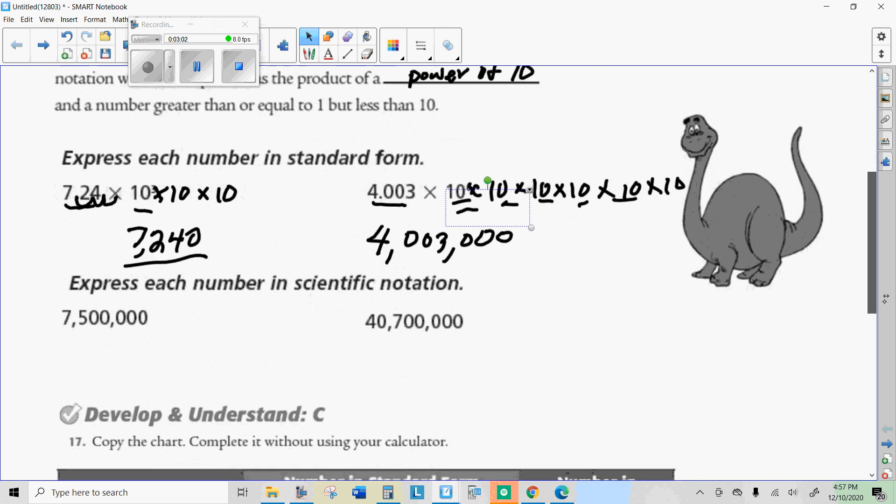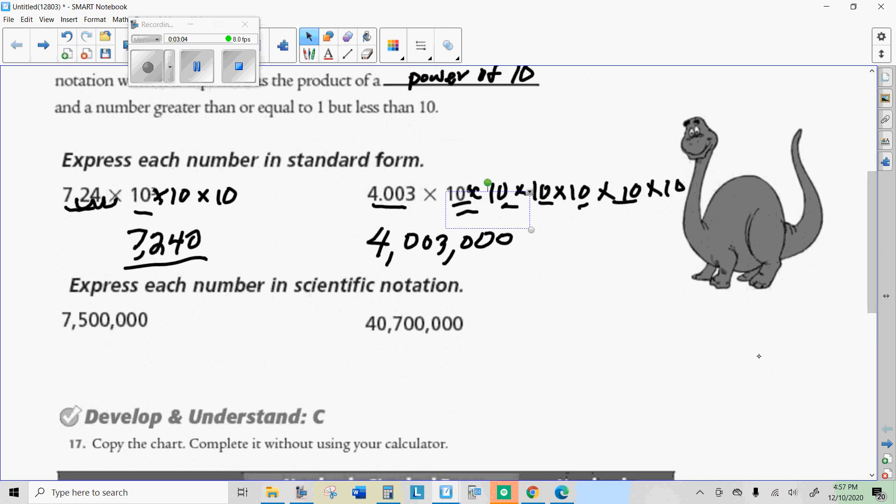Now on these, you're going to express each number in scientific notation. Remember that the first number has to be like these two numbers, where they only have one non-zero number, then the decimal, and then the other significant digits. On here, we're going to start it with 7.5, and then we're going to figure out how many times we need to multiply by 10 to get that. And here we're going to do 4.07, and then figure out how many times we need to multiply by 10 to get that.